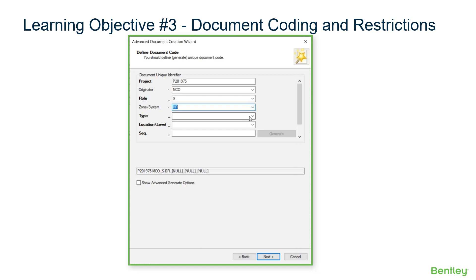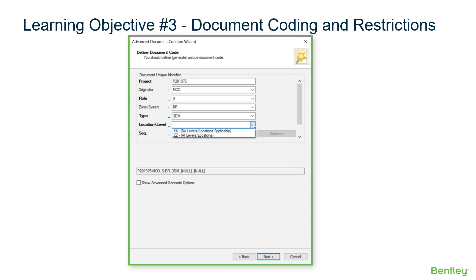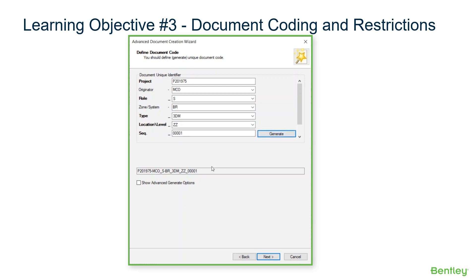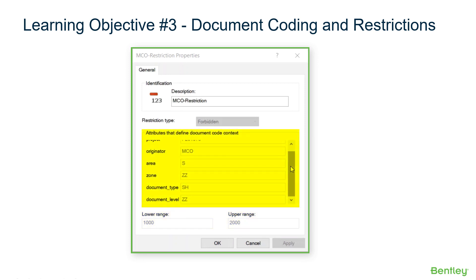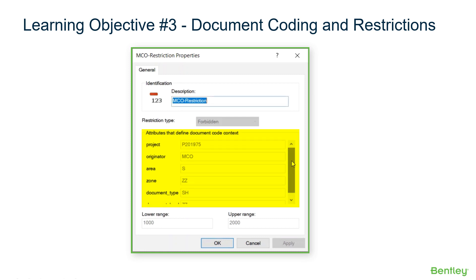ProjectWise administrators will learn how to create and restrict the use of specific document code combinations for groups of documents. The video clip demonstrates a user entering the document code in a document creation wizard. The next video clip shows an example of a document code restriction that was created. This forbidden restriction prevents serial numbers 1000 through 2000 from being used with a specific combination of document code parts.